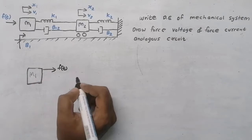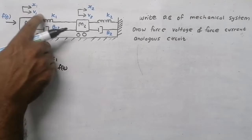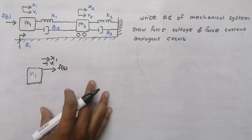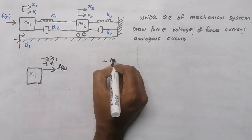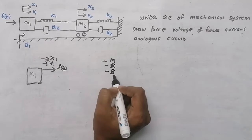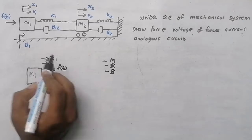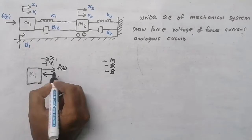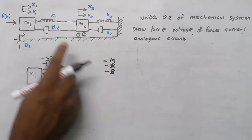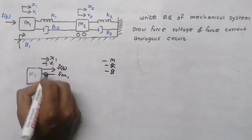There is a displacement x1 in the direction of force, and velocity v1 is also in that direction. Now we check the opposing forces. For a mechanical system the elements are mass, spring, and dashpot. Due to mass there will be an opposing force fm1. For spring, there is an opposing force fk1 — note that spring k1 is common to both mass 1 and mass 2.